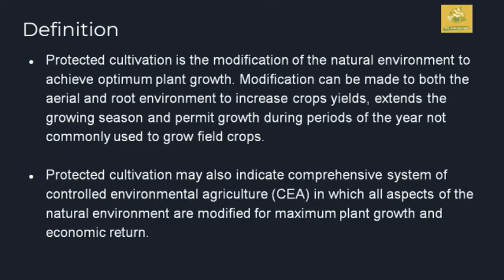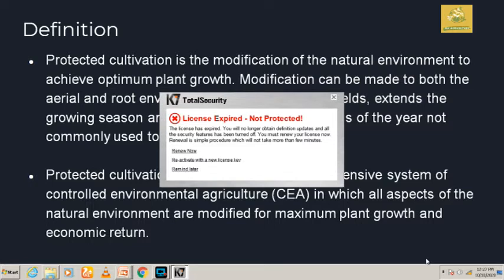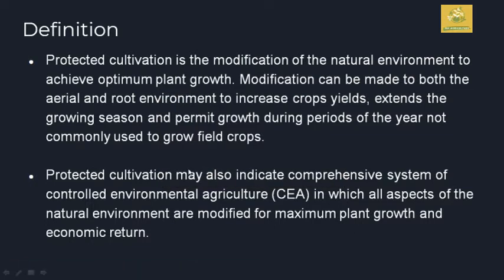After knowing the intro about productive cultivation of crops, let us move to the definition. Productive cultivation is nothing but the modification of the natural environment to achieve the optimal value of plant growth. By modifying the environment for the needs of the plant, we can make both the aerial and root environment to increase crop yields, extend the growing season, and permit growth during periods of the year when crops are not commonly grown in outdoor cultivation. Productive cultivation may also include a comprehensive system of controlled environmental agriculture, known as CEA, in which all aspects of the natural environment are modified for maximum growth and economic return of the plants.